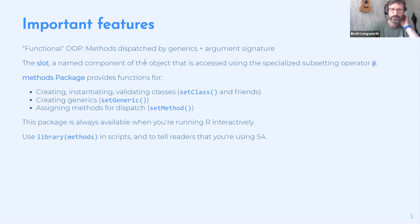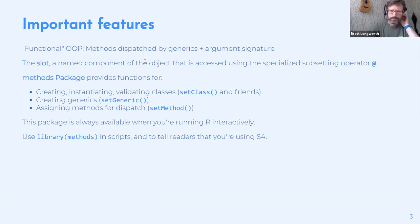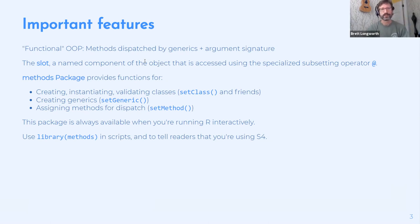The main functions the methods package provides for S4 are: `setClass` for creating, instantiating, and validating classes; `setGeneric` for creating generics; and `setMethod` for assigning methods to a generic once it's been created.